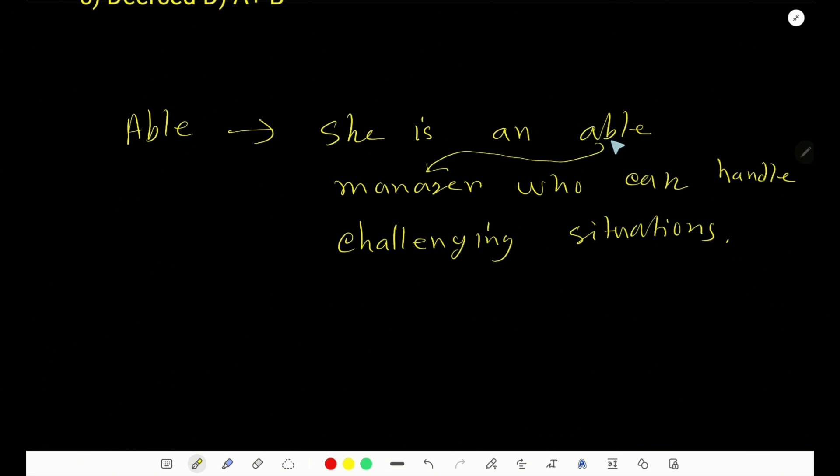Here, able is modifying the noun manager. Able is an adjective that is used to describe someone's capability or competence in doing something.